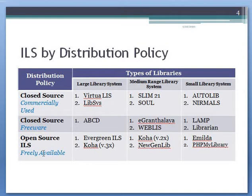Looking at the next slide, by distribution policy ILS can be distributed in three ways as represented on the left-hand side. These are: closed source, which are commercially used; closed source but not commercially used — freeware, free to download and use; and open source ILS, which are freely available, meaning the source code is freely available, but they are not free software.